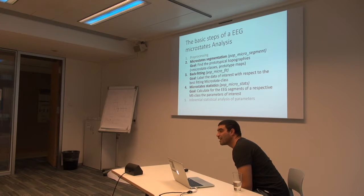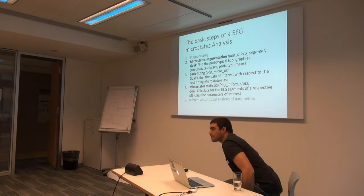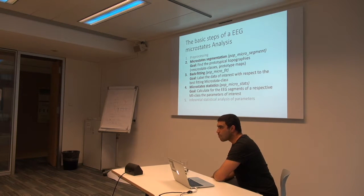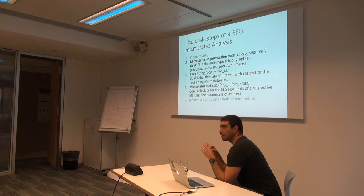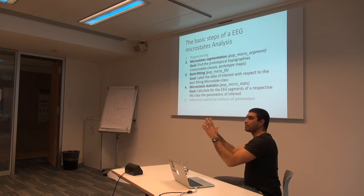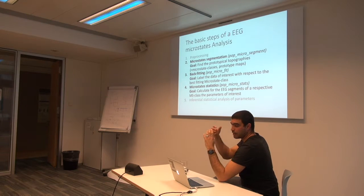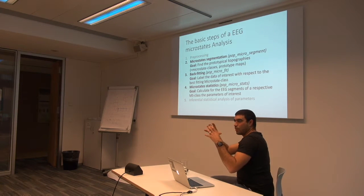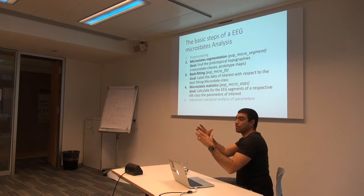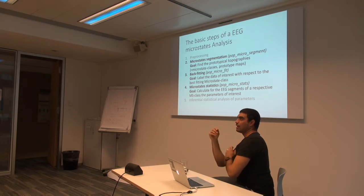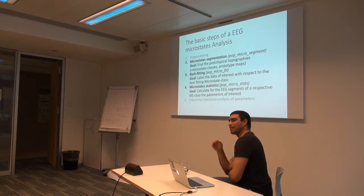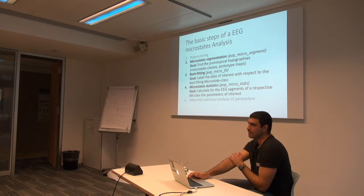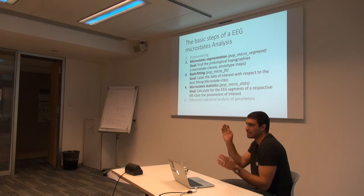Question: If I understood correctly, you have some predefined microstates and you're trying to find out to which microstate the specific segment of the specific subject belongs. How do you define those microstates? The microstates — you have these prototypical maps — and you get them out of the microstate segmentation. This is typically done with k-means clustering, where you look for the most prominent topographies. You can do it differently for each subject or across subjects. Microstate analysis is not really the classical analysis — there are many ways to do it.